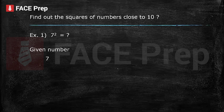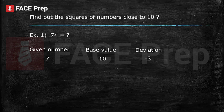Let's take an example: find out the square of 7. Step 1: deciding the base value. The base value should be a number which is near to the given number and on which we can easily apply mathematical operations like addition, subtraction, multiplication, and division. Step 2: finding the deviation — the difference between the given number and the base value. The difference is minus 3, because the given number 7 is three less than the base value. For deviation, we subtract base value from given number: 7 minus 10 gives us minus 3.